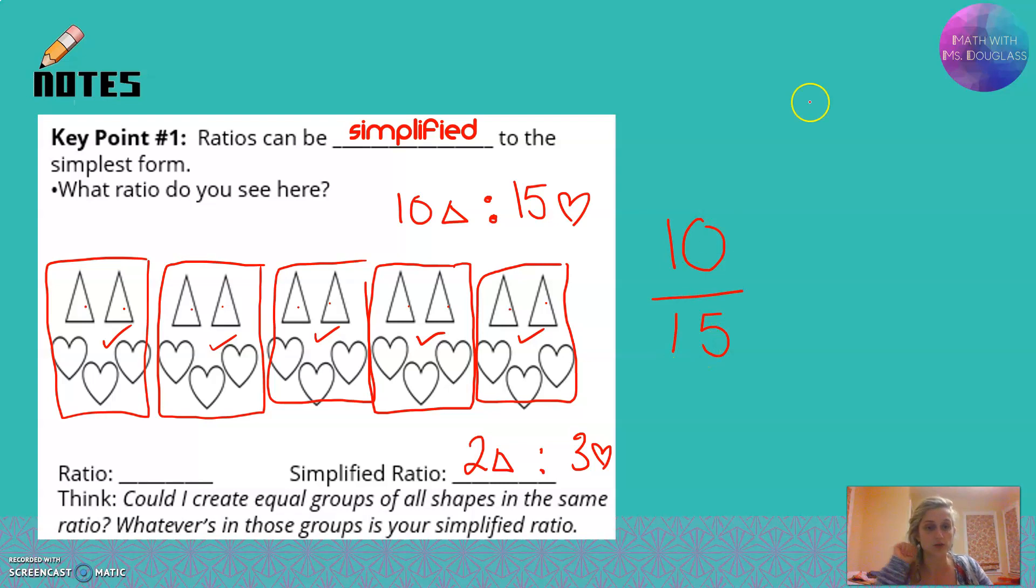Think way back to like the factor rainbows. You can even go off to the side and say, I know that 10 is made up of 1 times 10 and 2 times 5. And I know that 15 is made up of 1 times 15, 3 times 5. And you can say, oh, hey, I found my greatest common factor. Remember those? It's 5.